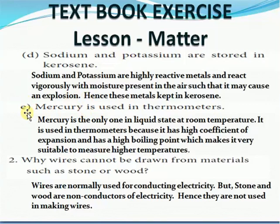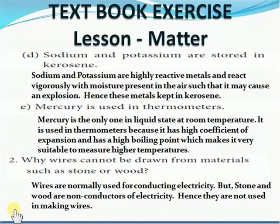Next question: mercury is used in thermometers. Mercury is the only metal available in liquid state. It is used in thermometers because it has a high coefficient of expansion — even with a very small temperature difference it expands, so we can easily monitor the temperature. It also has a very high boiling point, so even very high temperatures can be measured.